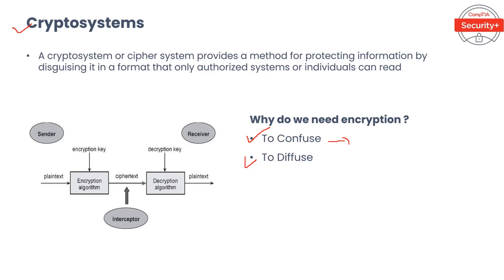The process of encryption is based on two different principles: confusion and diffusion. First, let's talk about confusion. The plaintext input should be significantly changed in the resulting ciphertext. More technically, each bit of the resulting ciphertext should depend on numerous parts of the key to hide any connection between the two, making it difficult to reverse from ciphertext to plaintext without the key.